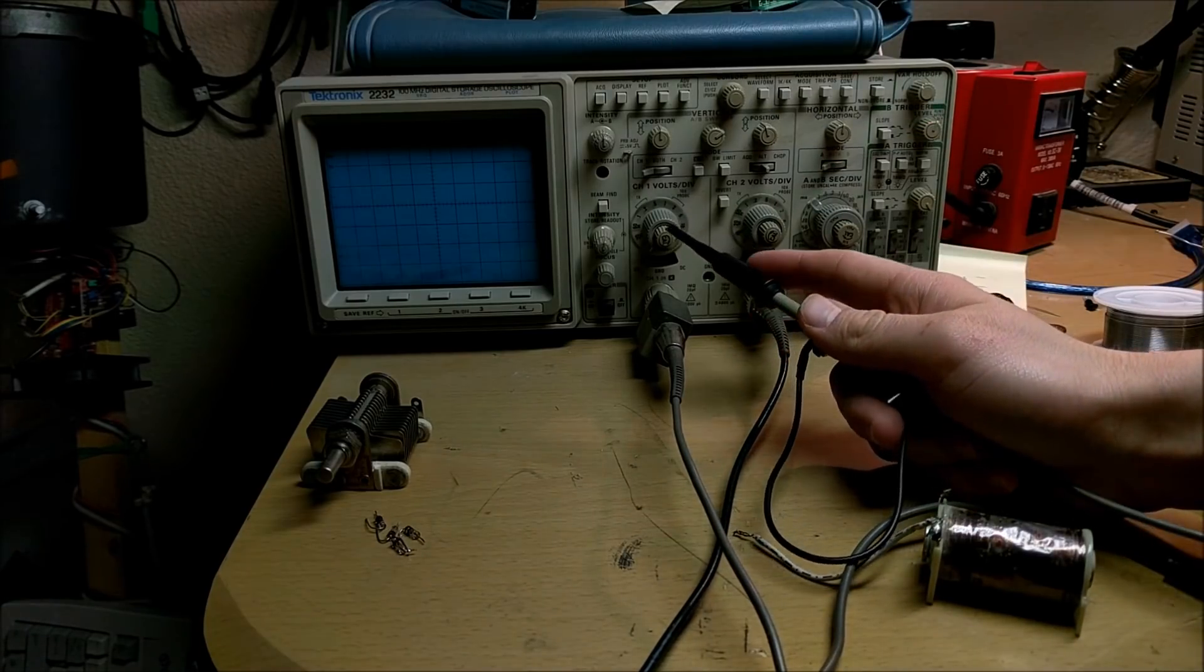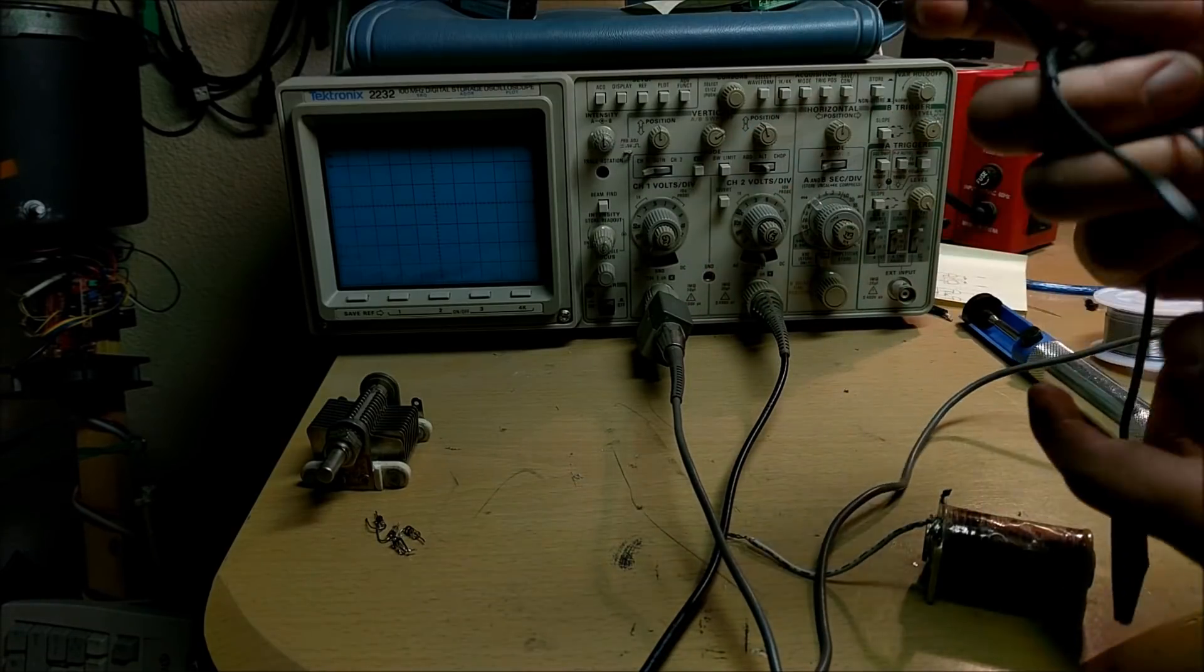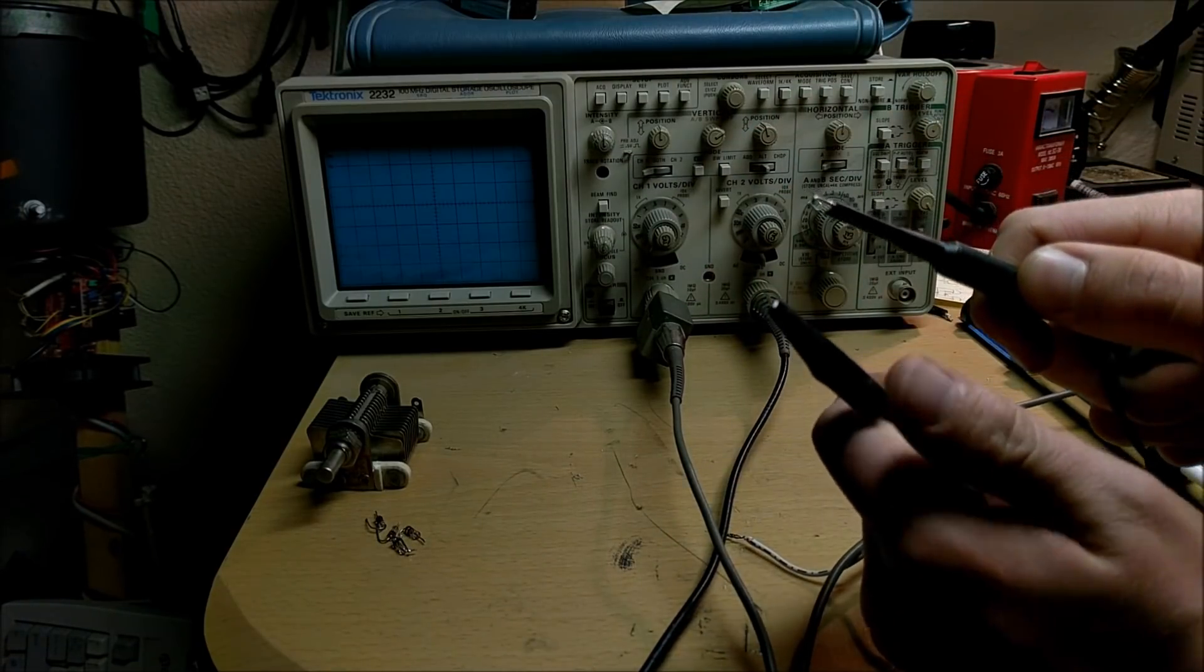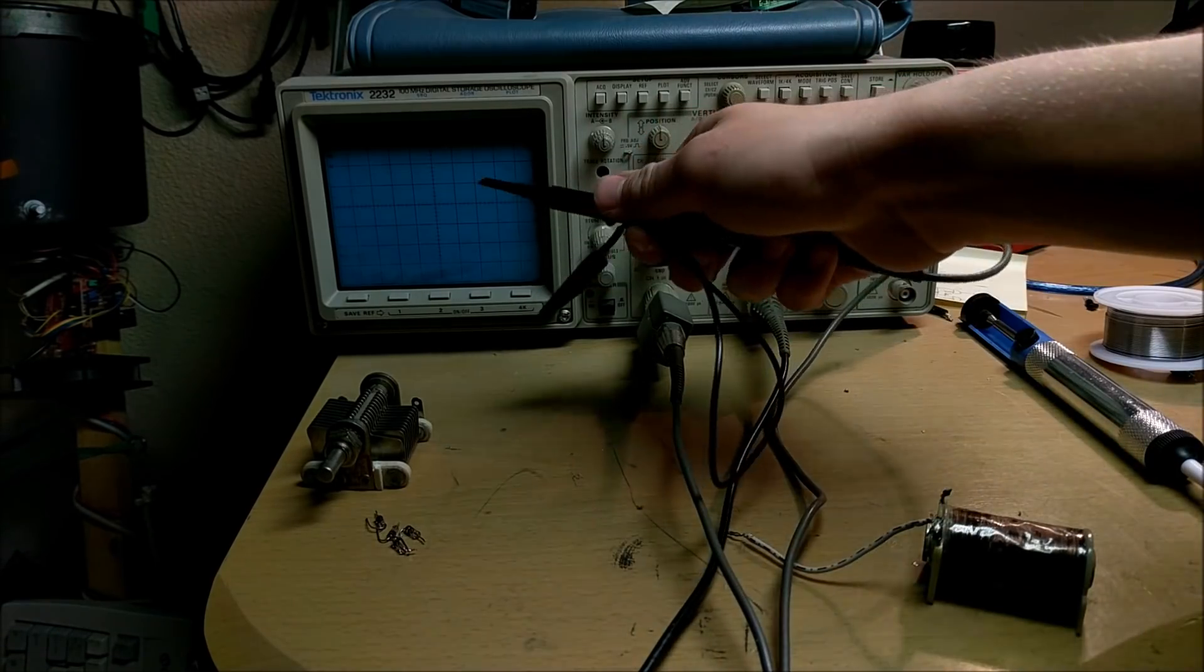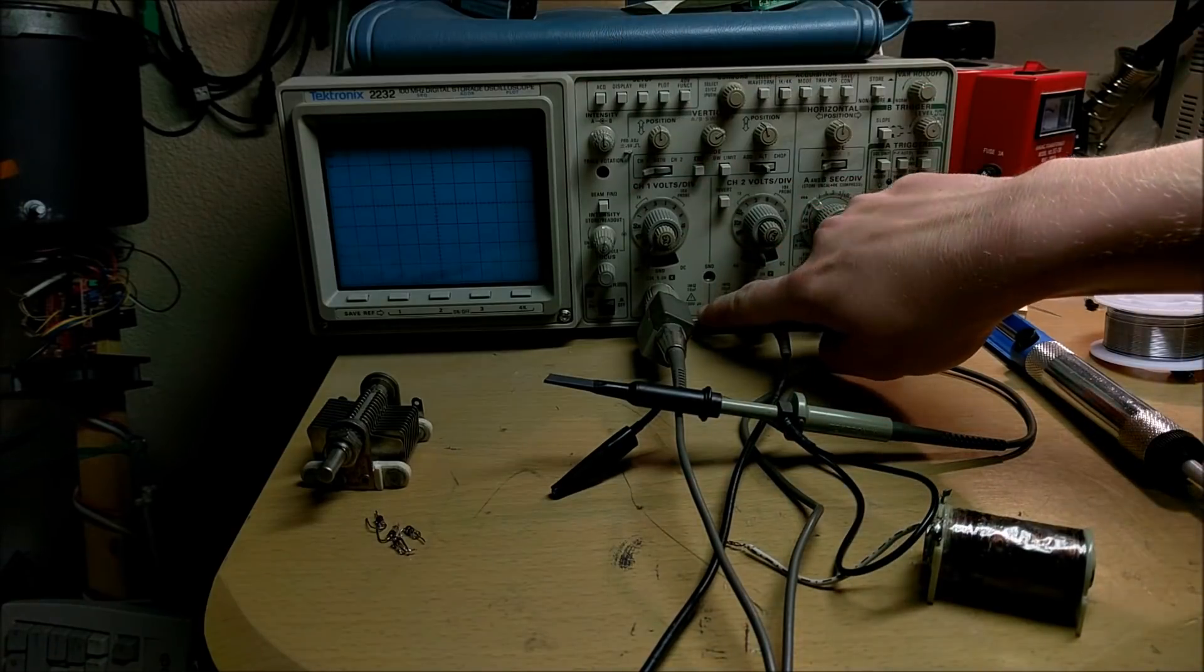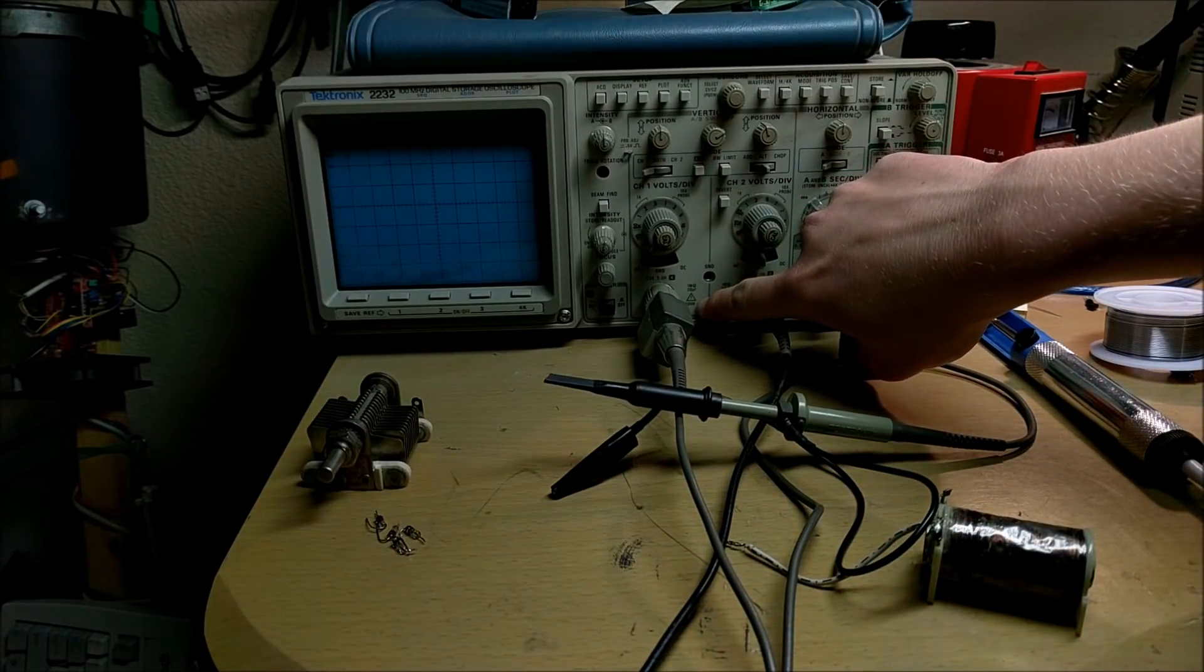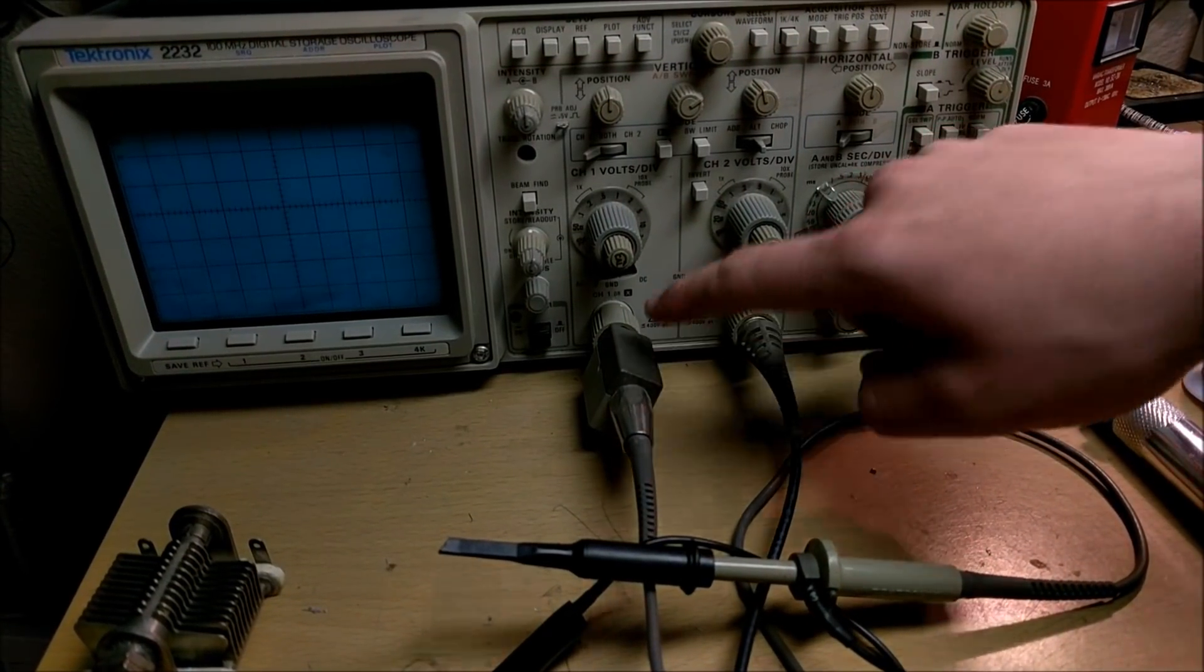Normally, if you want to measure a waveform on your oscilloscope, you connect what you're measuring to the probe and ground, and the waveform displays on screen. But this doesn't always work because the maximum voltage input of this oscilloscope is approximately 400 volts, as stated here next to the probe entry.